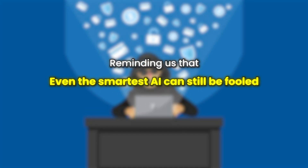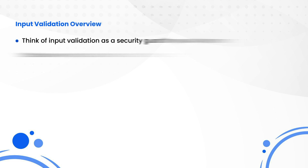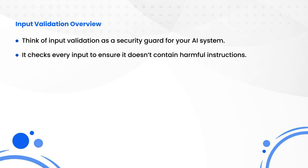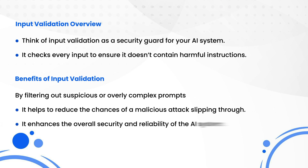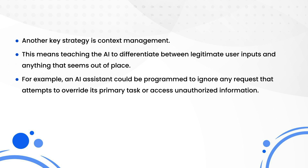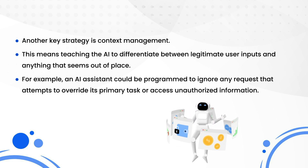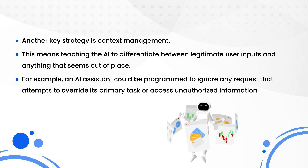So how do we defend against prompt injection attacks? The good news is that there are strategies to mitigate these risks, but they require a combination of technical solutions and good practices. First, let's talk about input validation — this is like a security guard for your AI system, checking every input to ensure it doesn't contain harmful instructions. By filtering out suspicious or overly complex prompts, we can reduce the chances of an attack slipping through. Another key strategy is context management: teaching the AI to differentiate between legitimate user inputs and anything that seems out of place. For example, an AI assistant could be programmed to ignore any request that attempts to override its primary task or access unauthorized information.